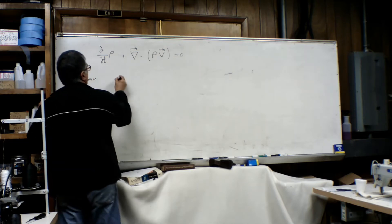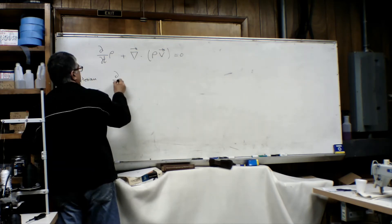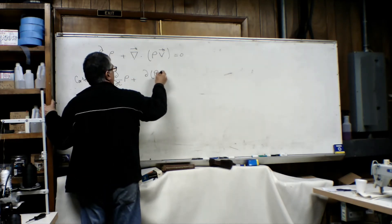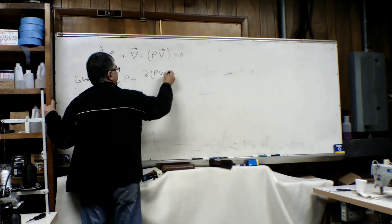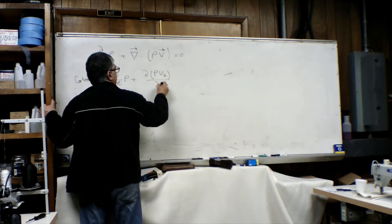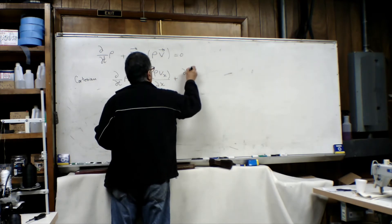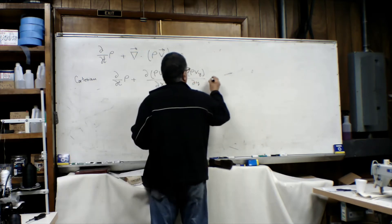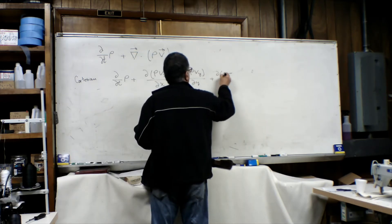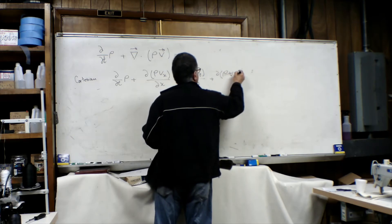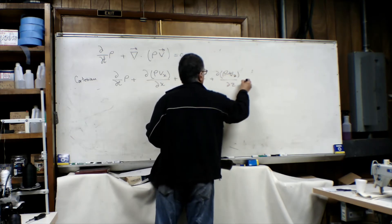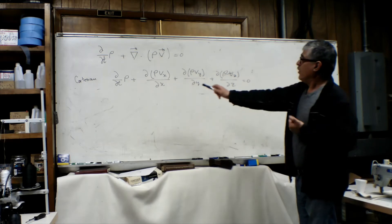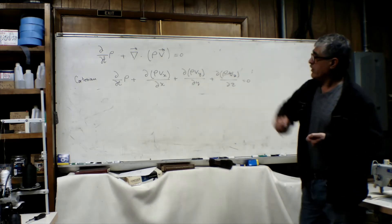In the Cartesian coordinate system, this equation will be the partial derivative with respect to time of rho, plus the partial derivative of rho times the velocity in the x direction with respect to x, plus the partial derivative of rho times the velocity in the y direction with respect to y, plus the partial derivative of rho times the velocity in the z direction with respect to z, equal to zero. This is our continuity equation in Cartesian coordinates.